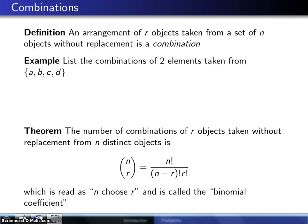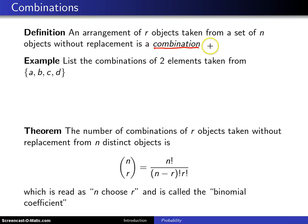The definition of a combination is an arrangement of r objects taken from a set of n objects without replacement is a combination. Now, the key here with combinations is order is not important. Whereas in the case of permutations order was critical, here the order doesn't matter.